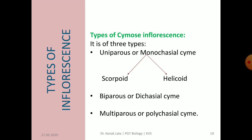The arrangement of flowers is in basipetal or centrifugal succession, meaning outer or basal flowers are younger and central or upper flowers are older. Cymose inflorescence is of three different types: uniparous or monochasial cyme, which is further divided into scorpioid and helicoid; biparous or dichasial cyme; and multiparous or polychasial cyme.